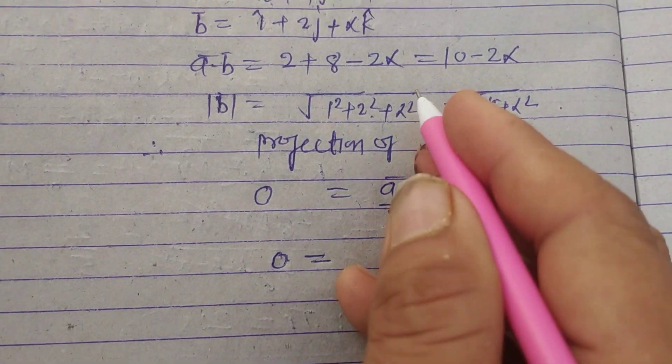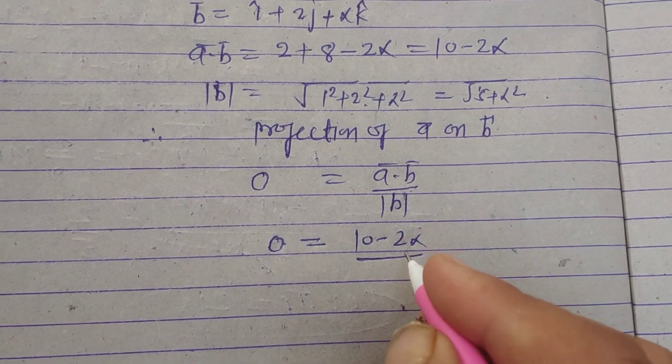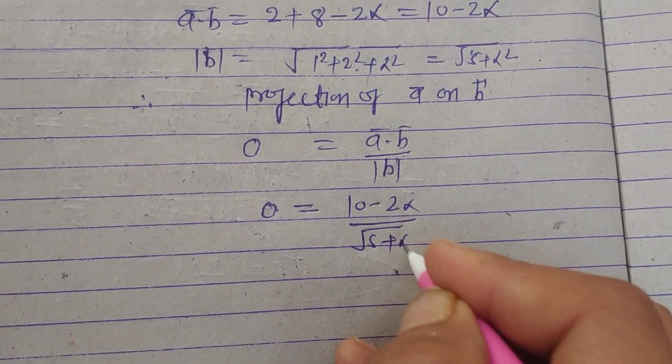So zero equals a dot b, which is what? A dot b is 10 minus 2 alpha upon under root 5 plus alpha square.